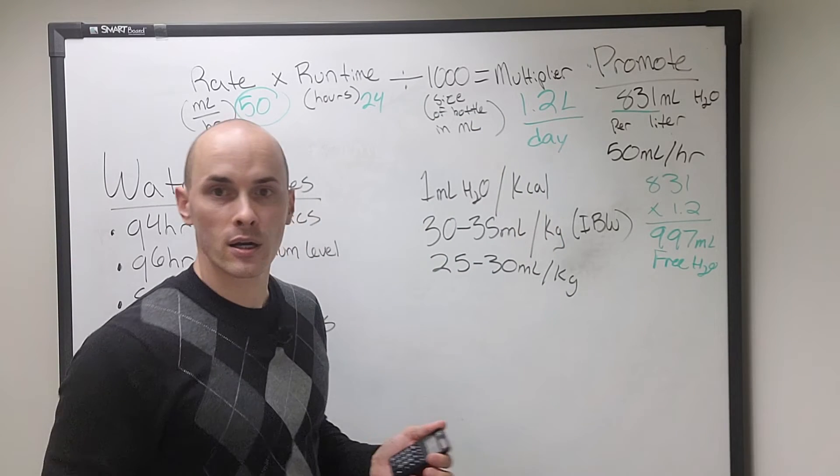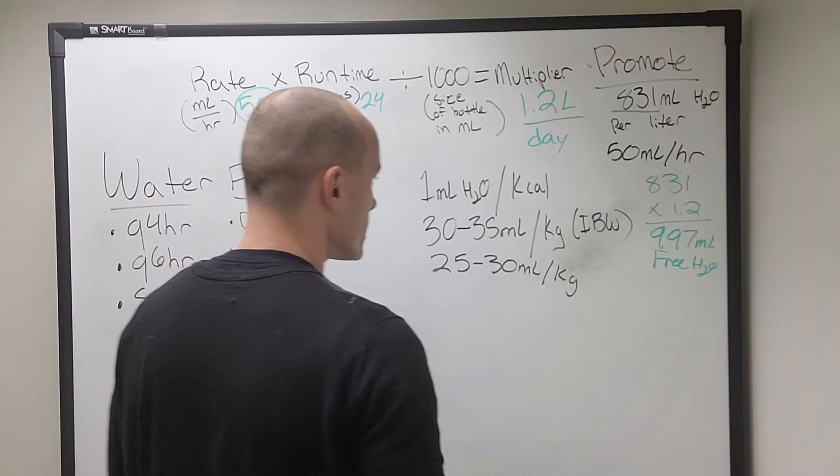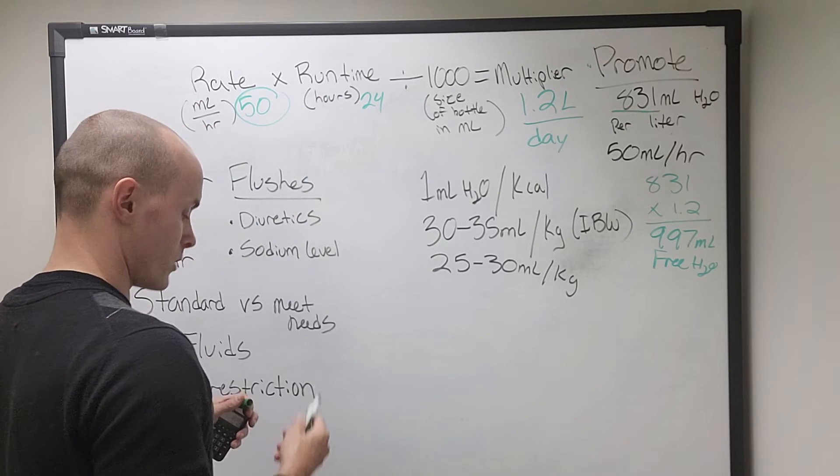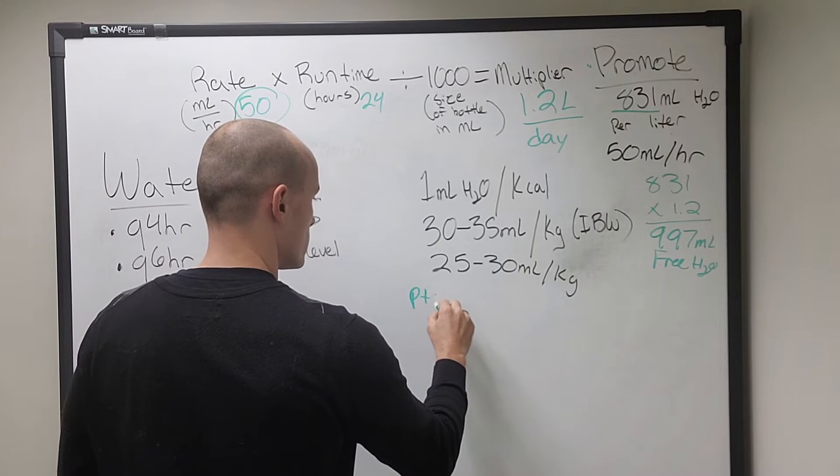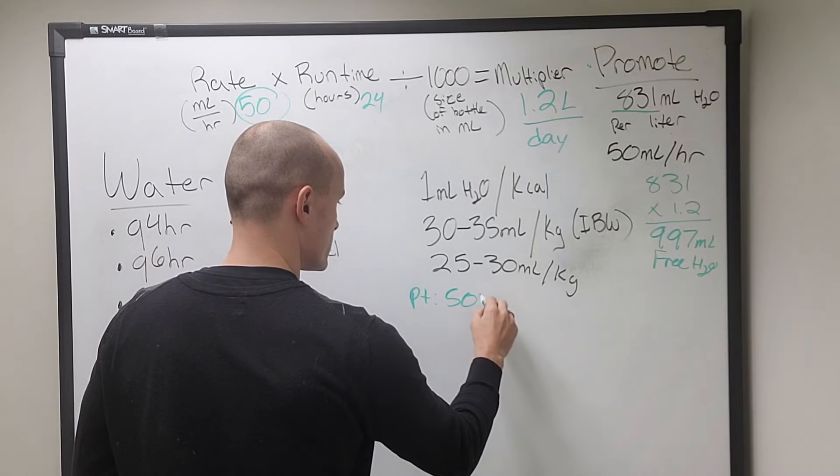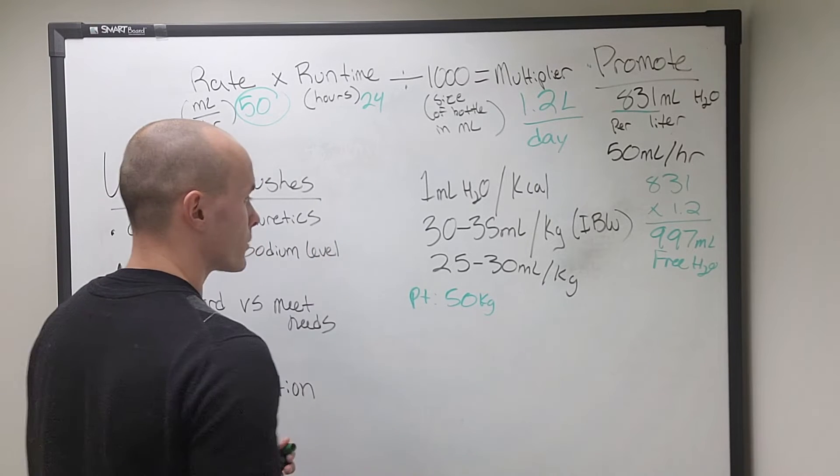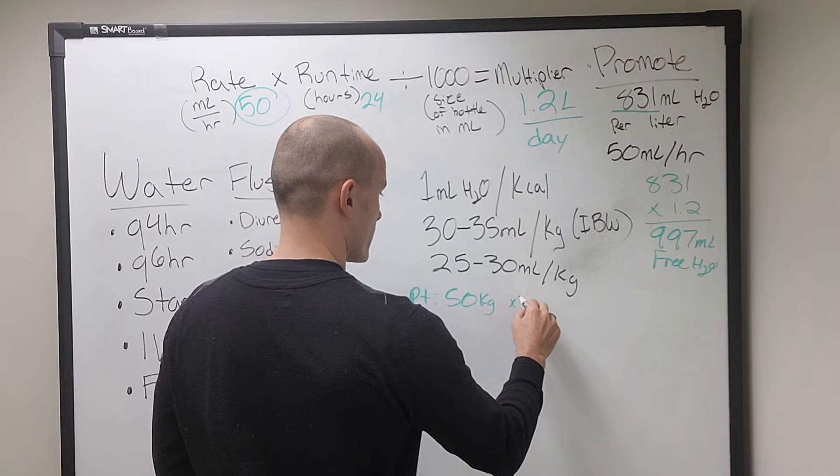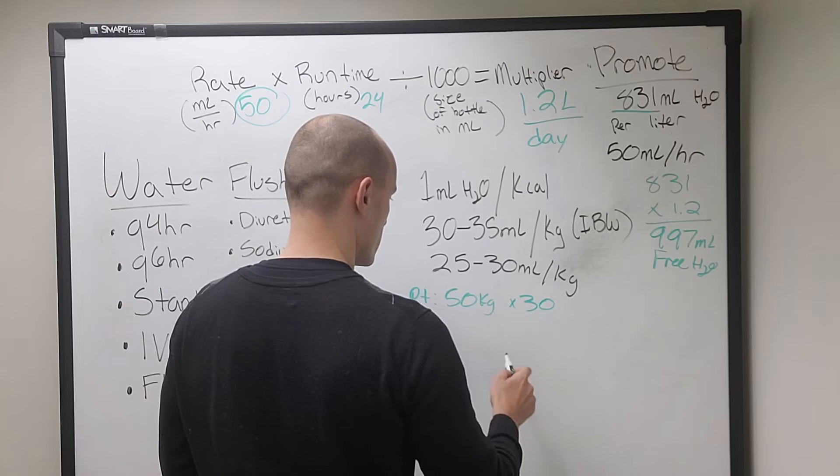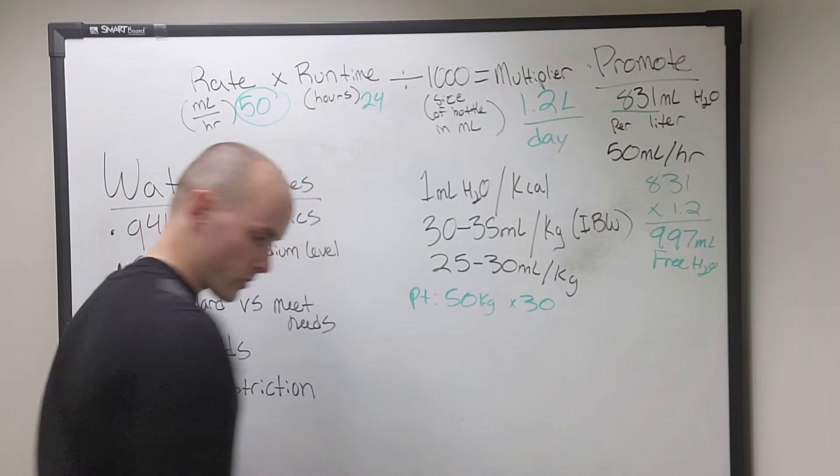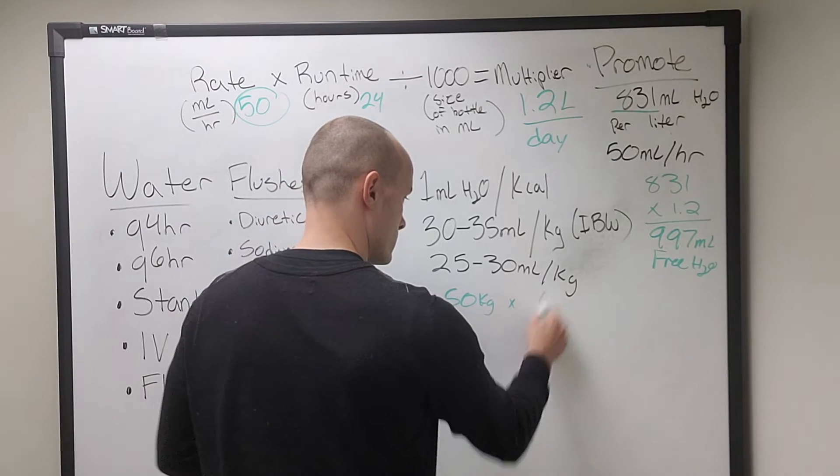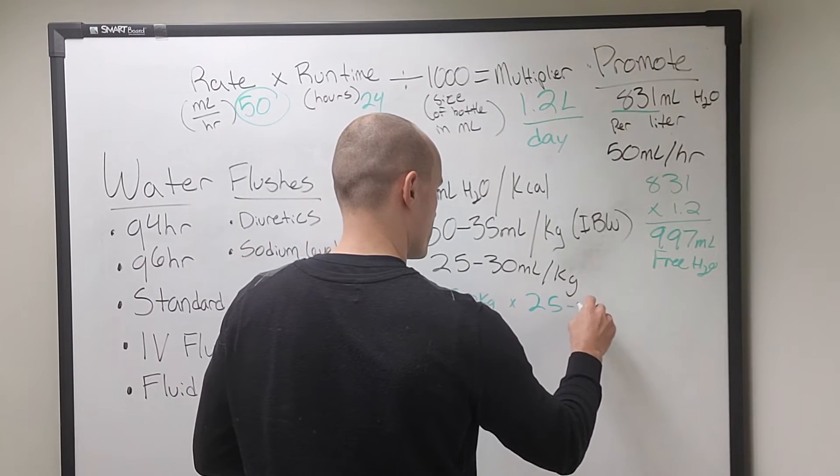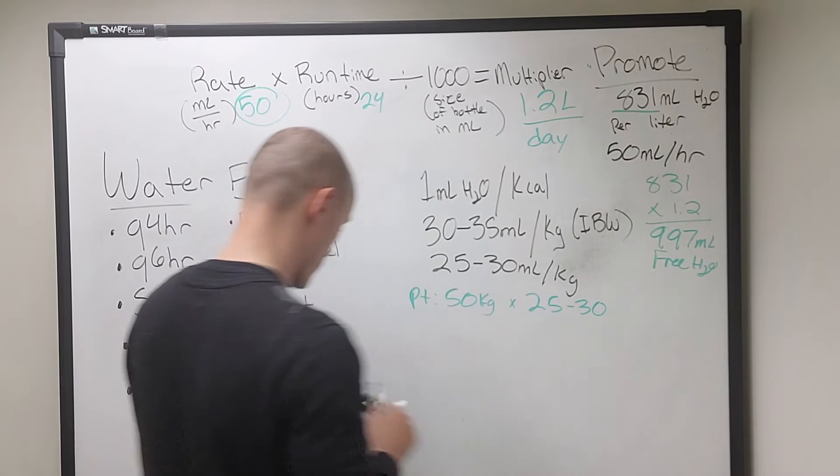997 milliliters of free H2O. Can y'all see that there in the corner? Yeah. So let's say our patient weighs 50 kilograms. We have a patient who is 50 kilograms and we're going to multiply that by 30. Or we can do a range. We'll do 25 to 30, 25 to 30 per kilogram.